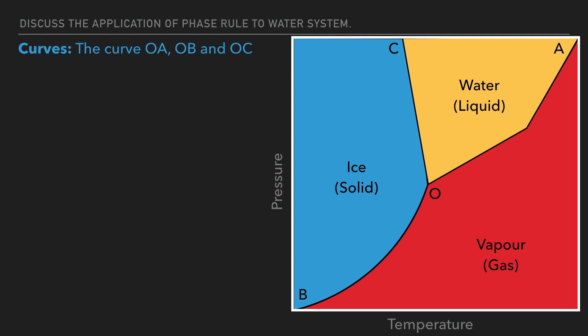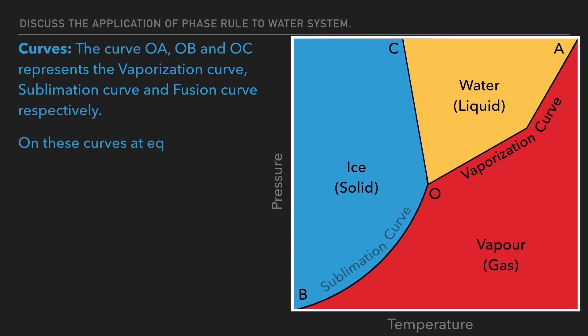Now let's talk about the curves. The curves OA, OB and OC represent the vaporization curve, sublimation curve and fusion curve respectively. On these curves at equilibrium, two phases exist simultaneously.